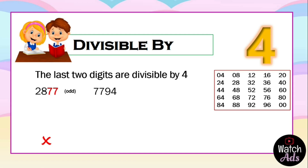Next, we have 7,794. Check the last two digits: 94. 94 is even. Now we can proceed to check if 94 is divisible by 4.